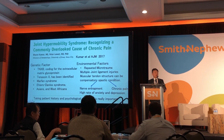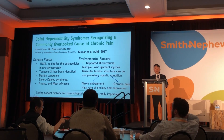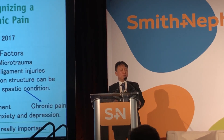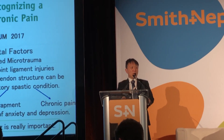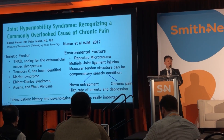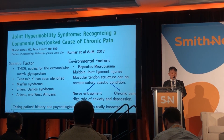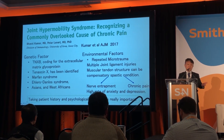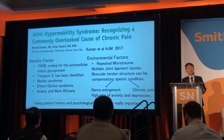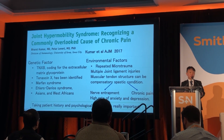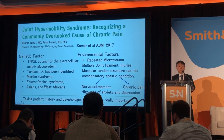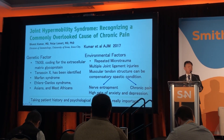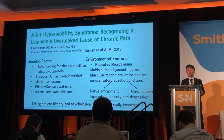Environmental factors include repeated micro-traumas caused by sports activities, affecting multiple joints. This leads to chronic pain caused by muscular and tendon structures, which can be compensated by specific overload phenomena. Advanced fatty changes can cause nerve compression, resulting in dysfunction and chronic pain, and spastic muscle tendons can also cause chronic pain. These unexplained pains and dysfunctions can lead to anxiety and depression, which is why taking a thorough patient history and performing psychological screening is really important.